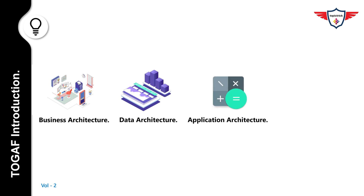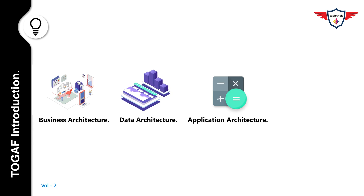The third one is application architecture. Application architecture provides a blueprint for the individual applications to be deployed, their interactions, and their relationships to the core business processes of the organization.